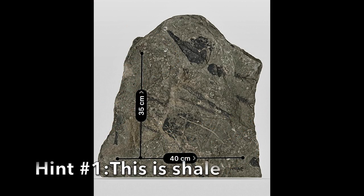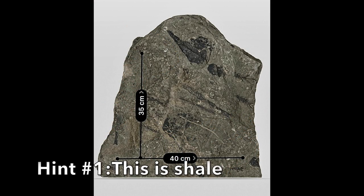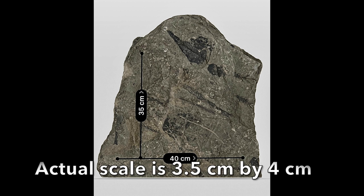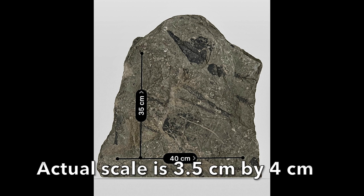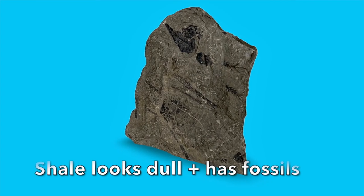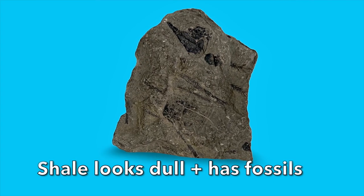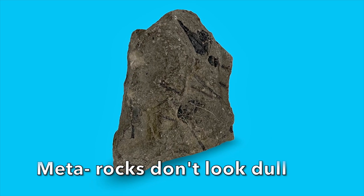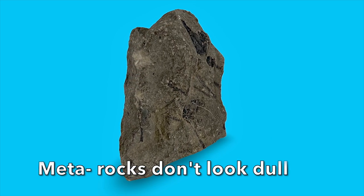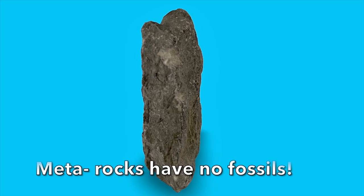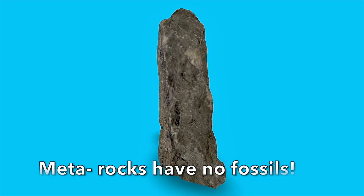First, you need to recognize that shale is not a metamorphic rock. Here's an example of shale. Shale is a sedimentary rock made of compressed silt and clay. Therefore it looks dull like dry mud. Shale also may contain fossils. Metamorphic rocks do not look dull like mud and almost never have fossils. So avoid shale as an answer on this metamorphic quiz.